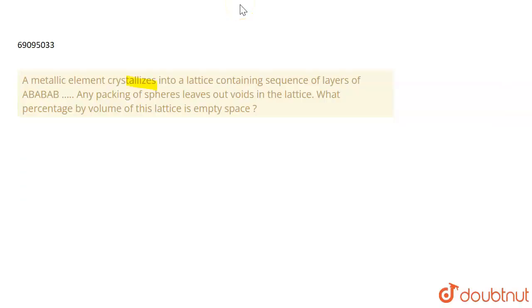A metallic element crystallizes into a lattice containing a sequence of layers of ABAB. Any packing of spheres leaves out voids in the lattice. What percentage of volume of this lattice is empty space? So basically, you need packing efficiency. ABAB type packing, the empty space will come out.